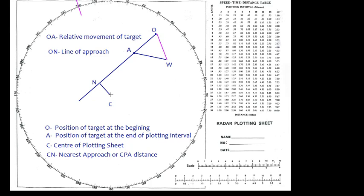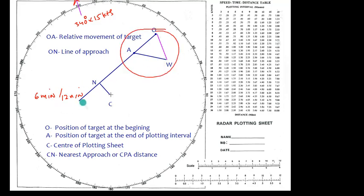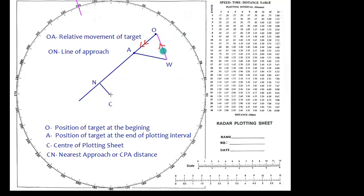Now let's talk about the OAW triangle. Suppose a ship moves in a certain direction with some course, say 340° at 50 knots. We need to determine the plotting interval — it can be 6 minutes, 12 minutes, and so on. We construct a triangle for that duration: OA is the relative approach, OW is own ship's vector, and then we obtain WA, which gives the course and speed of the target.